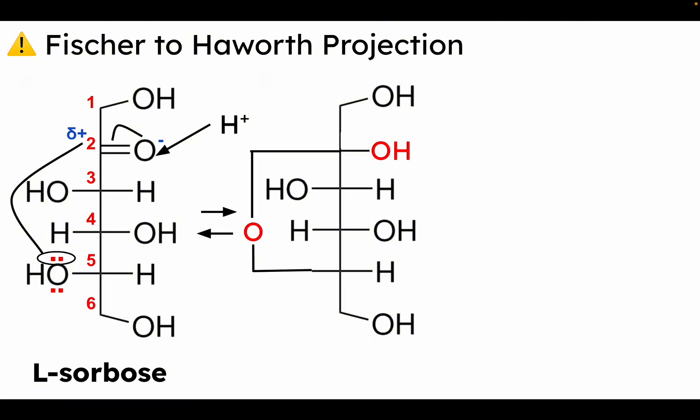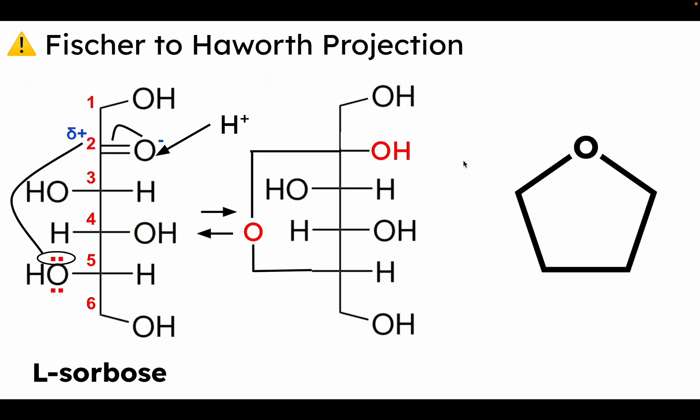Remember, ketoses form furanoses — a five-membered ring. So I'll draw a five-membered polygon. This oxygen here corresponds to the ring oxygen. Then we start numbering from carbon two, three, four, five.